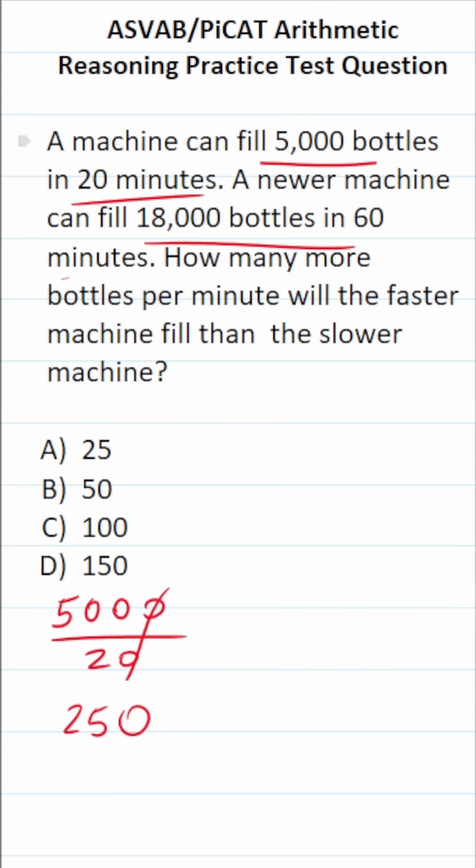All right, let's take a look at this other machine that can fill 18,000 bottles in 60 minutes. And let's go ahead and determine how many bottles it can fill per minute by doing 18,000 divided by 60. Cross out these corresponding zeros. This becomes 1,800 over 6. Again, you should know that 18 divided by 6 is 3 and just tack on those two zeros. So this one can fill, as you can see, 300 bottles per minute. How many more per minute can this machine fill than this machine?